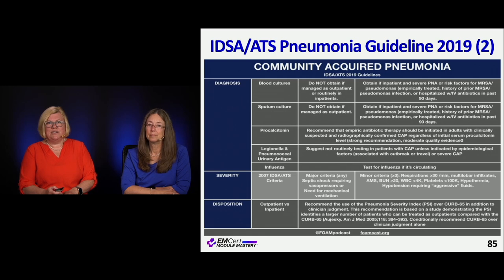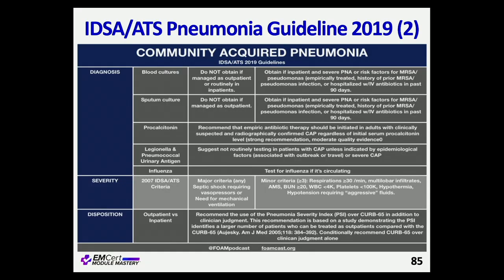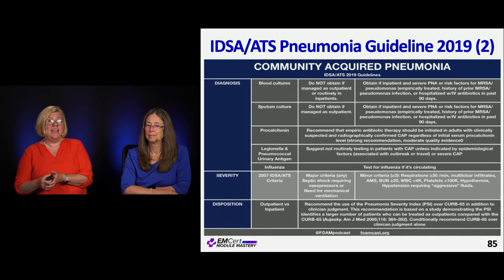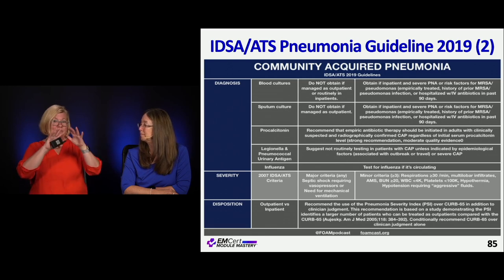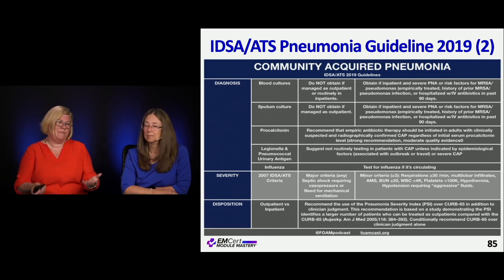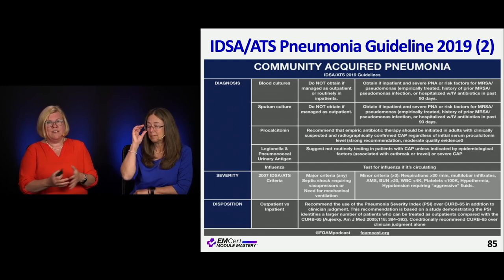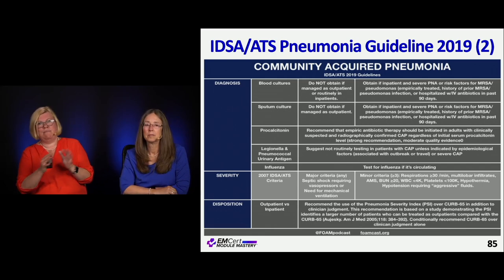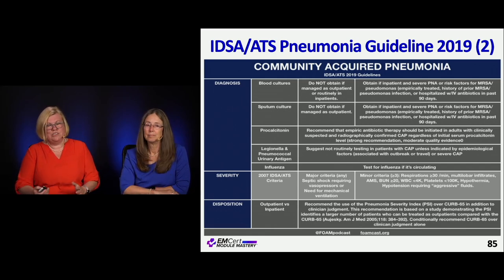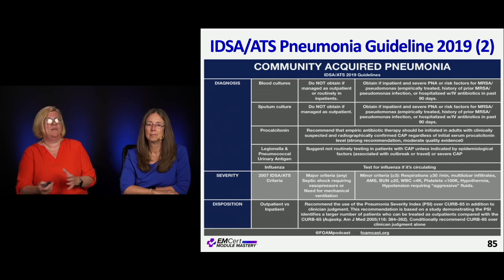Based on the 2019 CAP guidelines, diagnosis includes blood cultures, sputum culture, and procalcitonin. Special tests like legionella and pneumococcal urinary antigens are not routine but appropriate for at-risk patients. If you're in influenza season — or on the shoulders of flu season — test for flu. Severity classification uses major and minor criteria to categorize patients as outpatient, inpatient, or ICU-level, and scoring systems can help guide those admission decisions.